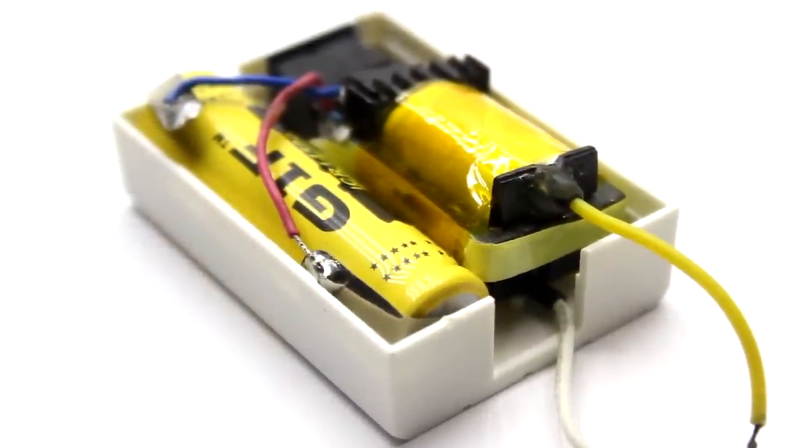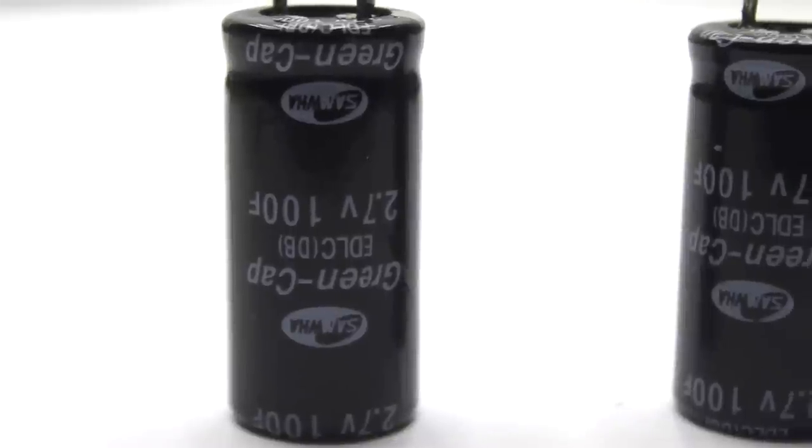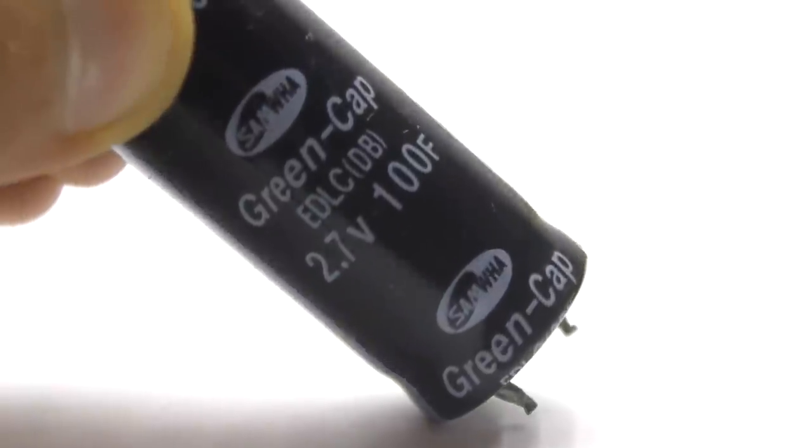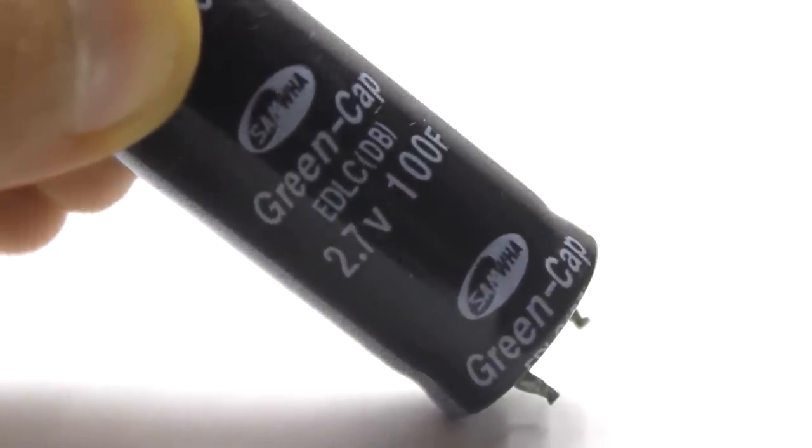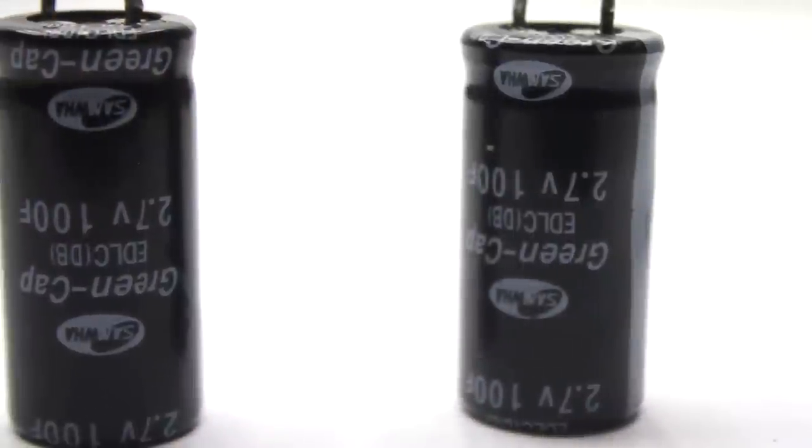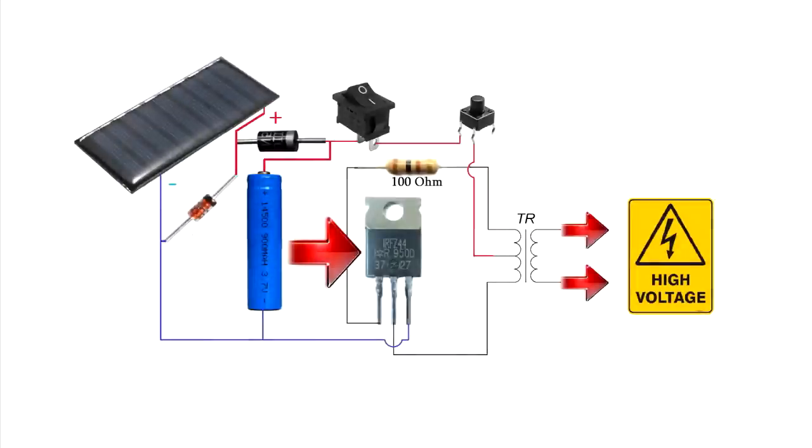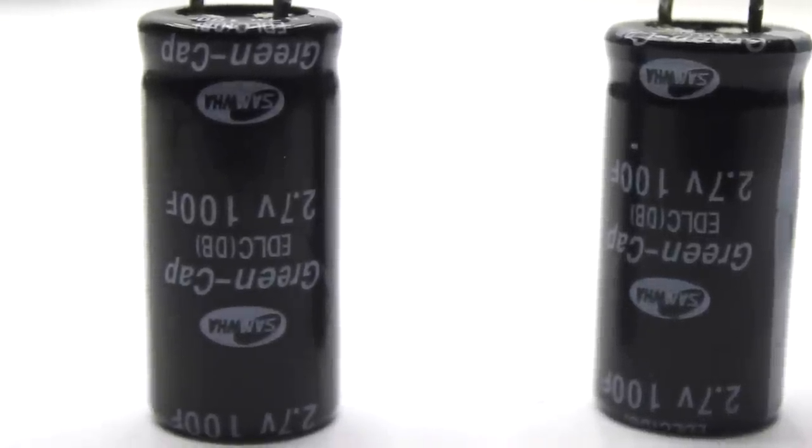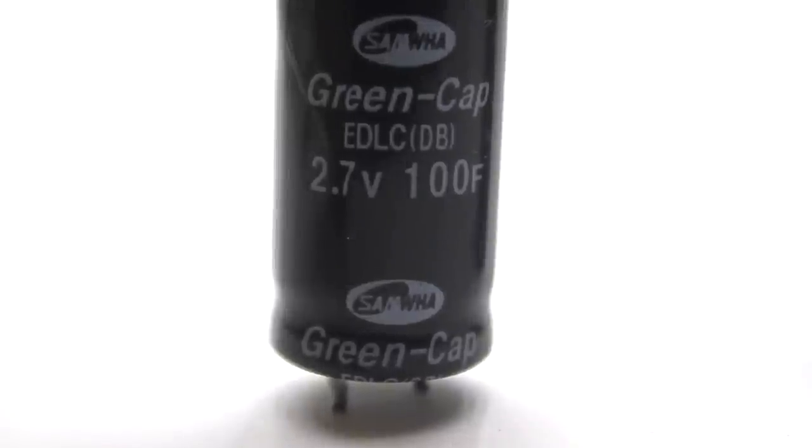Now about the other parts of the lighter. At first, I wanted to use an ionister or supercapacitor as a power source. They are for 2.7 volt. The capacity could be different. My sample is as much as 100 farads. If we use field effect transistors with a lower operating voltage, then the ionister will fit as a power source. It has a long service life, but its charge was sufficient only for 10 seconds of continuous operation of the lighter.